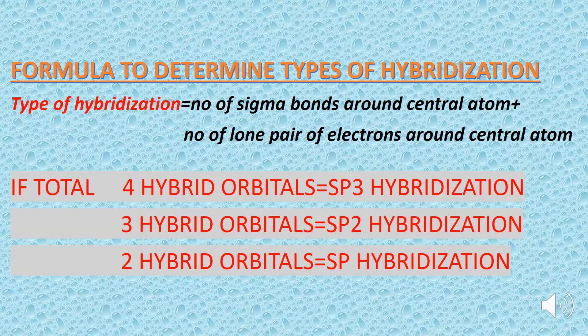Note that due to the greater repulsion of the lone pair of electrons, the bond pairs compress together and the normal bond angles will be disturbed.